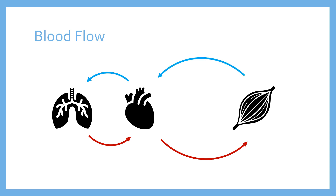You can see there's almost a double circuit going on here: heart, lungs, heart — then heart, muscles, heart. The cycle continues almost as a figure-eight kind of cycle.